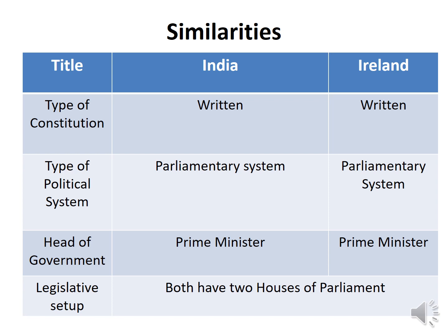Both countries follow a parliamentary system, where the executive is a member of the legislature. The head of government in both countries is the Prime Minister. Both also have a bicameral legislature — two houses of Parliament — so bicameralism is common to both India and Ireland.